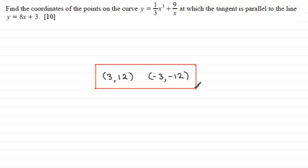Okay, welcome back then if you had a go. Well, the answer is that those coordinates are at 3, 12 and at minus 3, minus 12. So if you got that, that's brilliant. If not, and you'd like to see how this is done, I'll take you through the answer.